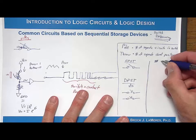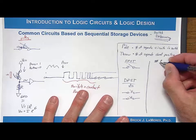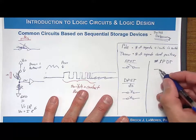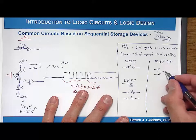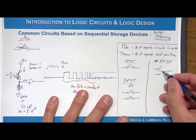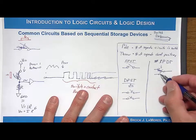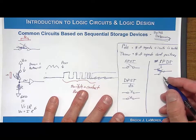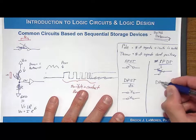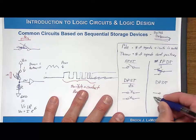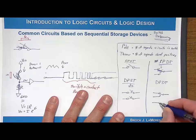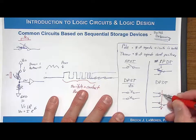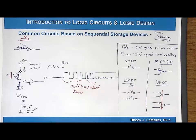Now let's look at the single pole double throw. Double throw means two closed positions. You'd have a button press that moves a contact back and forth between two closed positions. This is the switch we can use sequential logic storage devices for. A double pole double throw would be two of these in one package, where the button moves both contacts to their final position.